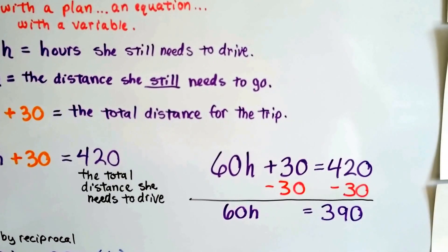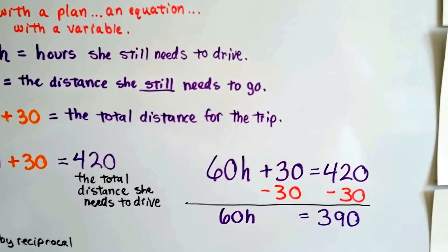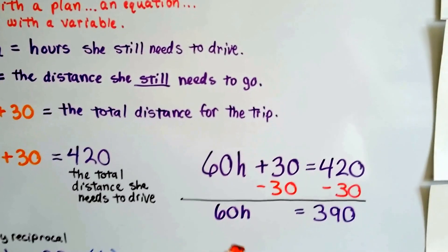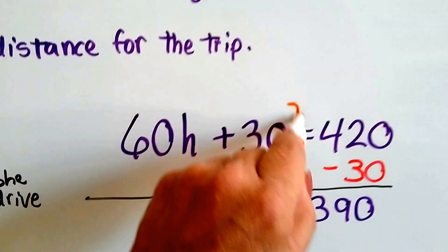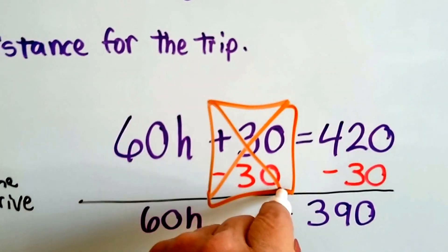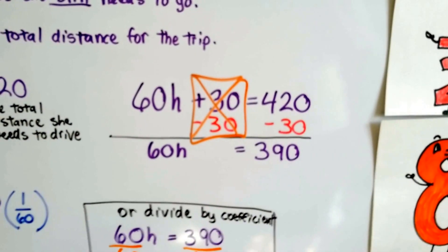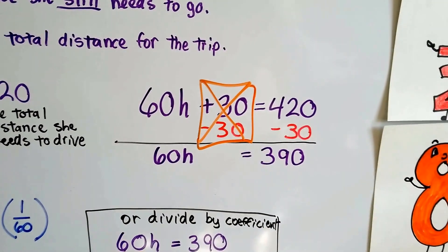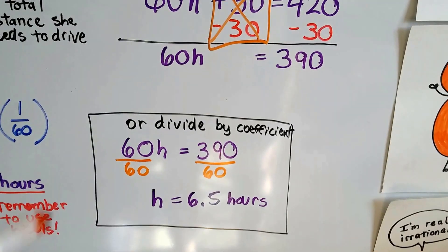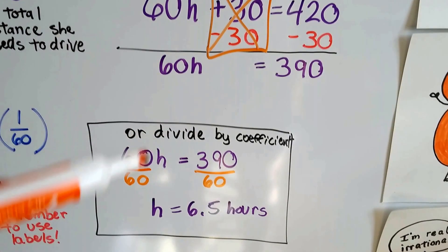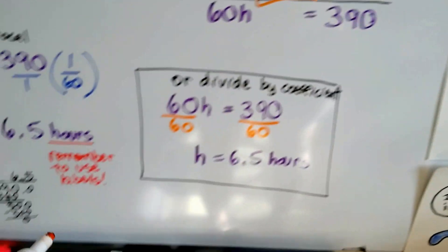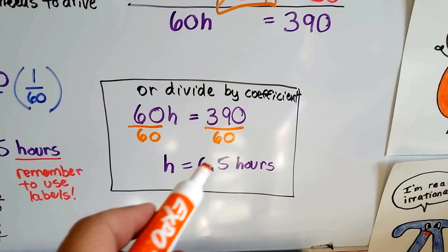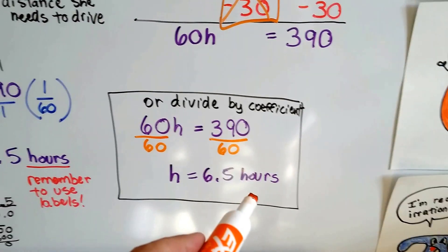Now we can use the addition property of equality on each side of the equation to make a zero pair here and get rid of that 30. And now we've got 60H equals 390. We can go the quick way and divide both sides by 60 and do a little line division down here. And we see that it comes out at 6.5 hours.